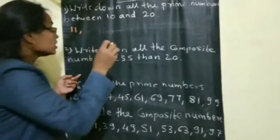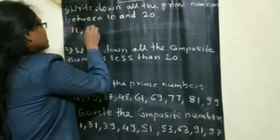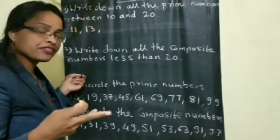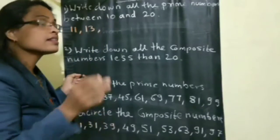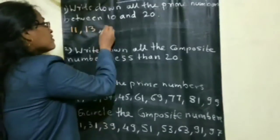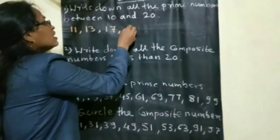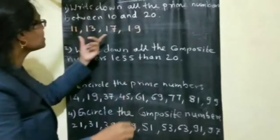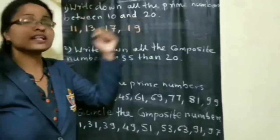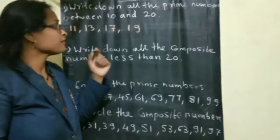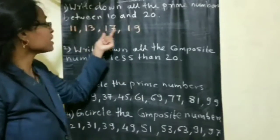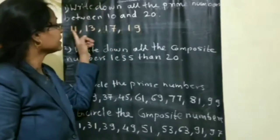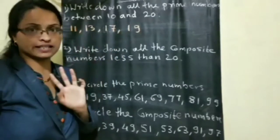12 is not a prime number. 13 is a prime number. 14, 15, 16 — no. 17 is a prime number. And 19 is also a prime number. So 11, 13, 17, and 19 are the prime numbers between 10 and 20. All these prime numbers have only two factors: 1 and the number itself.